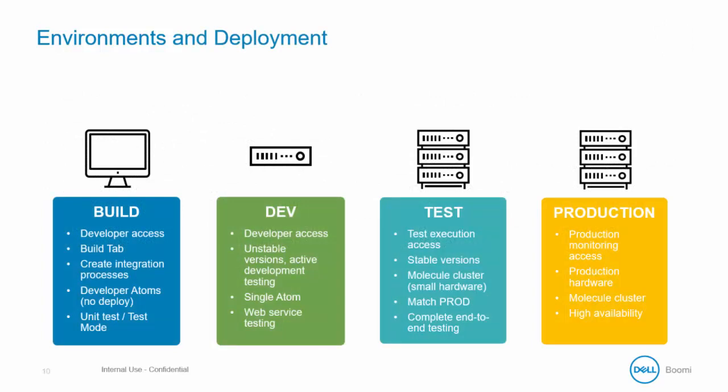Here is a recommended development lifecycle setup, though yours might differ depending on your needs. We start with the build tab on the far left, then we have three environments: Dev with a single atom, Test which uses a molecule cluster for end-to-end testing on small hardware, and Production which is the full production hardware running a molecule clustered runtime with high availability. The integration starts as a process in the build tab where developers build it out using unit testing in test mode, then it's deployed to the dev environment. The main process along with any child processes are bundled and deployed. We can also test web service listening connections in the dev environment that we cannot test in test mode.